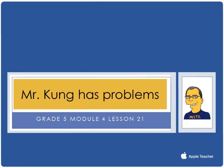Hello and welcome to another episode of Mr. Kung Has Problems. Tonight in Grade 5, we are working on Module 4, Lesson Number 21. And in Lesson 21, we are explaining the size of the product and relating fractions and decimal equivalents to multiplying fractions by one.